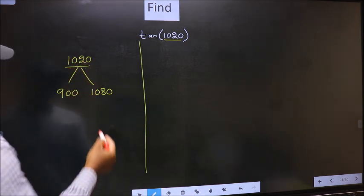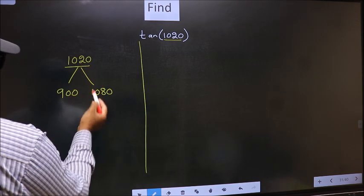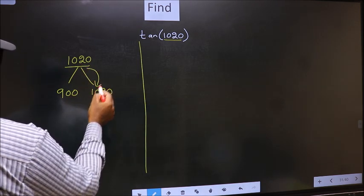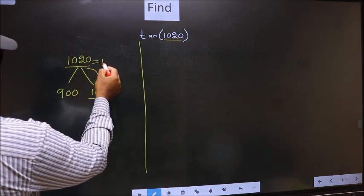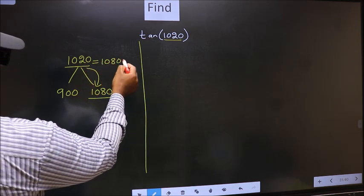Next, 1020 is close to which number? Remember, this is close to 1080. So in place of this, now we should write 1080 minus 60.